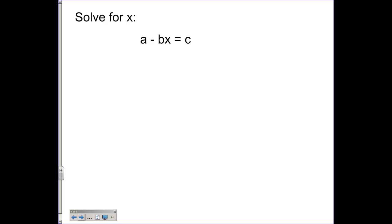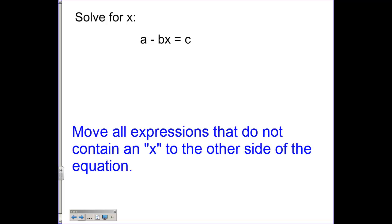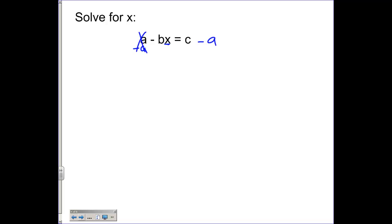We're going to solve for x. So anything that does not have an x in it is going to go to the other side first. So I've got to get rid of this a by minusing a from both sides. That will become a zero, and that is a negative bx left over, and I have c minus a.